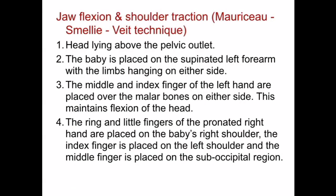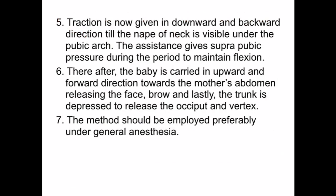The second procedure is jaw flexion and shoulder traction under the Mauriceau-Smellie-Veit technique. With the head above the pelvic outlet, the baby is placed on the supinated left forearm with limbs hanging on either side. The middle and index fingers of the left hand are placed over the malar bones to maintain flexion of the head. The ring and little fingers of the right hand are placed on the baby's right shoulder, the index finger on the right shoulder, and the middle finger on the suboccipital region. Traction is then applied.